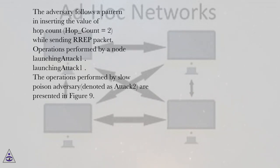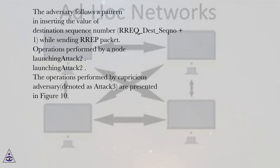Operations performed by a Capricious Adversary, denoted as ATTACK2, are presented in Figure 9. The adversary follows a pattern in inserting the value of Destination Sequence Number, REC_DEST_SEQNO plus 1, while sending the REP packet.